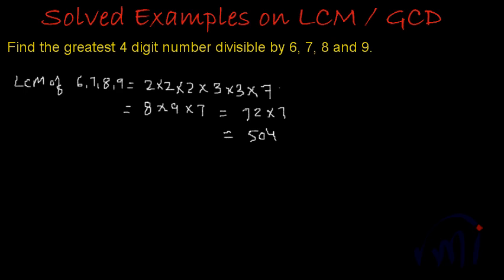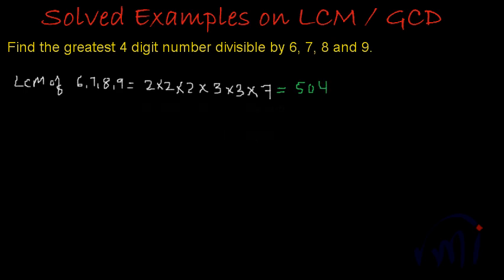Let me directly write the LCM over here. LCM of 6, 7, 8 and 9 is 504. And now what we have to find? We have to find the largest four-digit number which is divisible by 6, 7, 8 and 9. As we discussed, that number will definitely be a multiple of 504 because it has to be divisible by 6, 7, 8 and 9 — so it has to be a multiple of the least common multiple of all these four numbers.